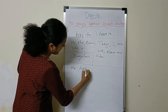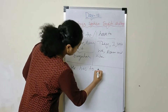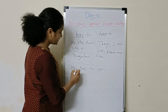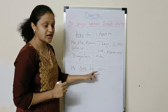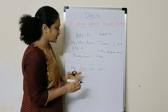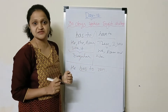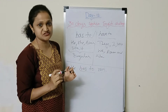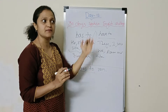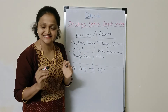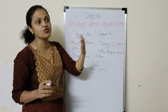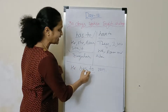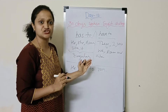Let us learn the sentences. He has to run. 'He' is a singular subject, so we use 'has to.' In this sentence, the verb plays the most important role — verbs are action words representing daily routines. He has to run — it shows obligation, like a necessity.